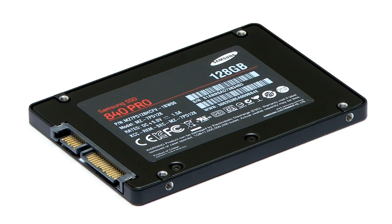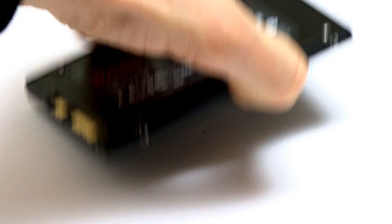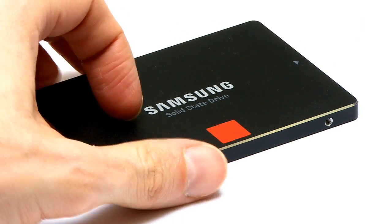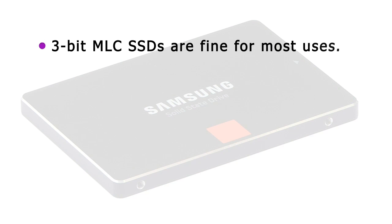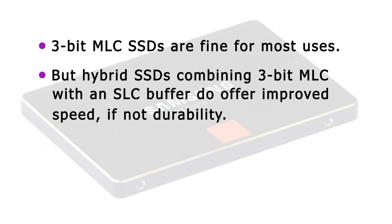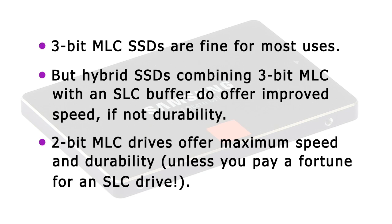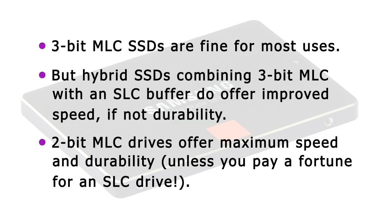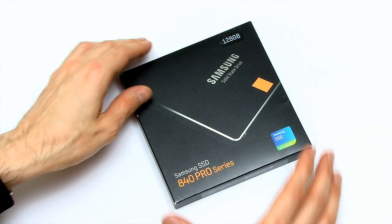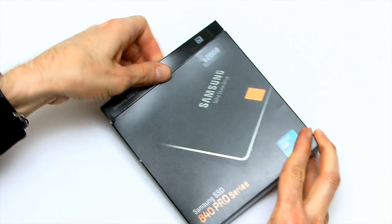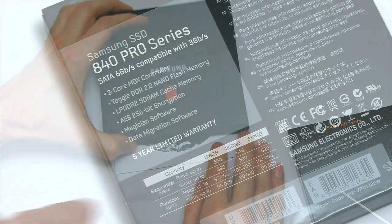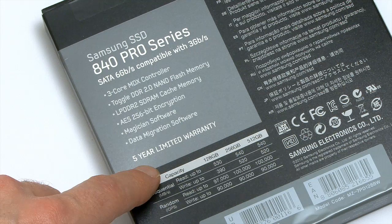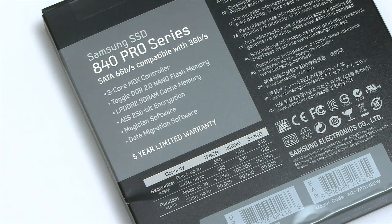For most users with typical requirements, a 3-bit MLC SSD will be fine. However, individuals seeking absolutely maximum performance may prefer to pay more for a hybrid drive like the EVO, while those seeking speed and durability may wish to sacrifice capacity by purchasing a 2-bit MLC model. Personally, I've just purchased a 128 gigabyte Samsung 840 Pro as the boot drive for a new business PC — not least because I wanted the 5-year guarantee only available on Samsung's 2-bit MLC Pro models.